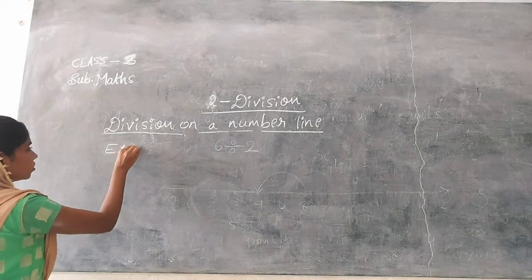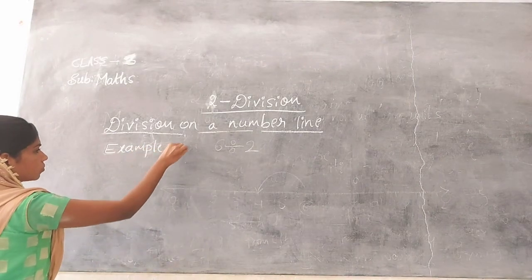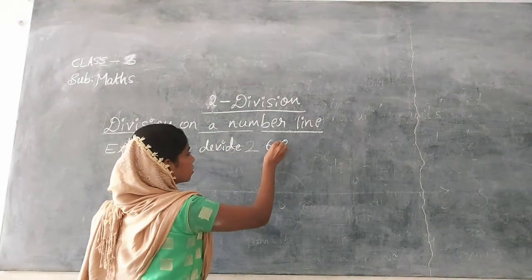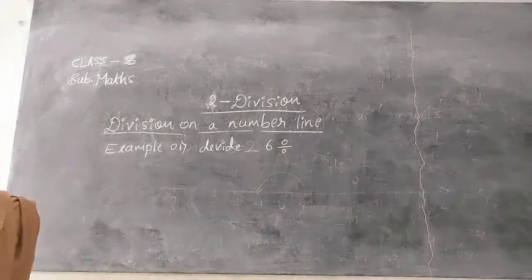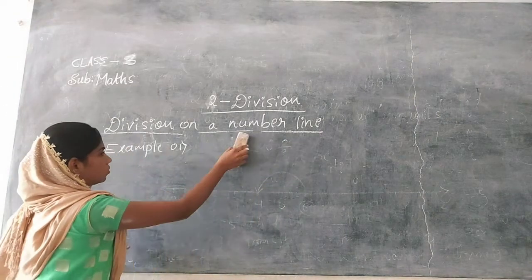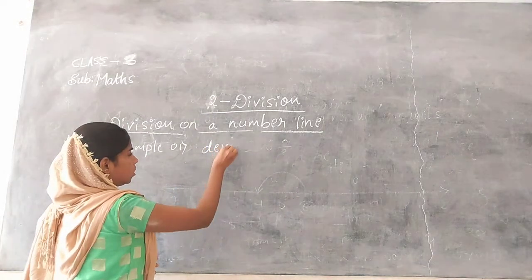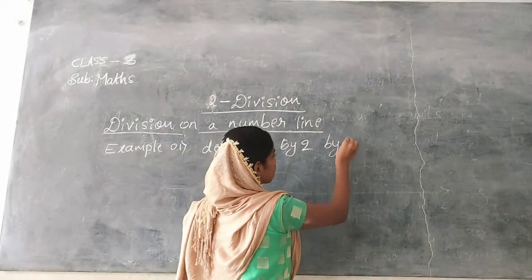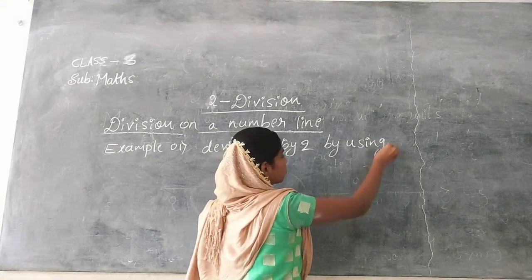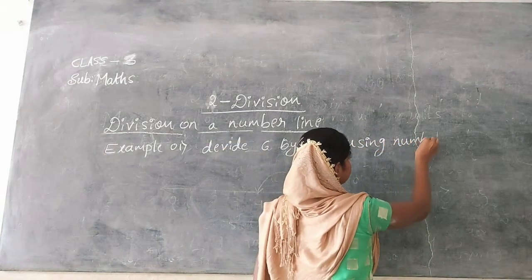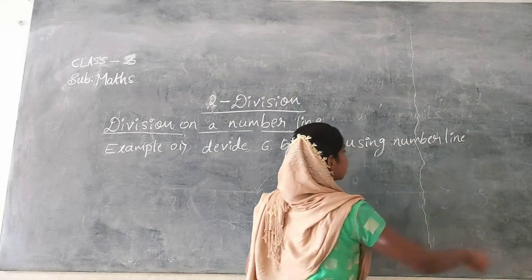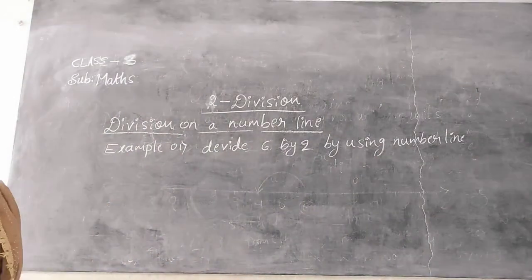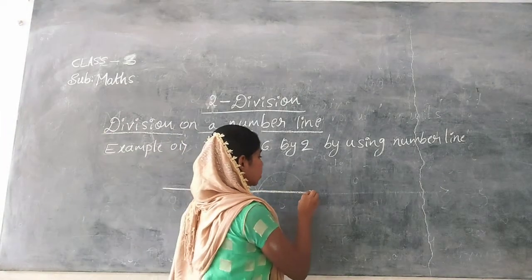We take one example here. Example number 1. Divide 6 by 2. So how can we divide 6 by 2 by using a number line? First, draw a number line.